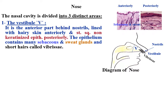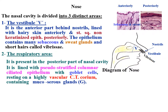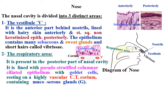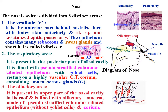The respiratory area is present in the posterior part of the nasal cavity. It is lined with pseudostratified columnar ciliated epithelium with goblet cells, resting on a highly vascular connective tissue corium containing mucoserous glands. The olfactory area is present in the upper part of the nasal cavity, in its roof, and is lined with olfactory mucosa made of pseudostratified columnar ciliated epithelium.